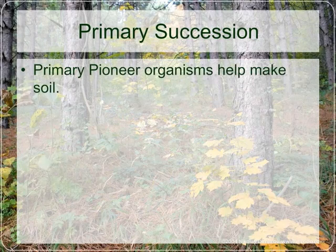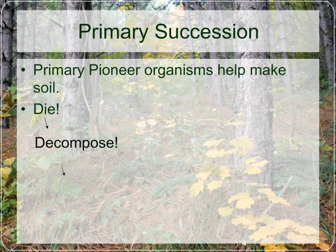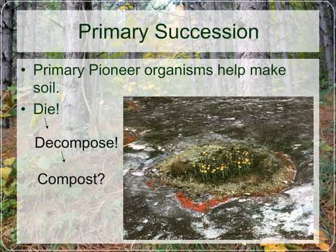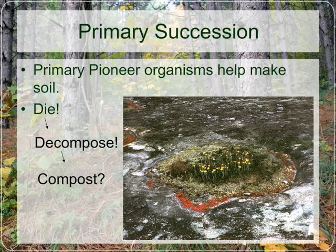As those algae do their job breaking down rocks through weathering, they also die and decompose, leading to basically their own version of compost. This diagram shows what was probably a large rock with a depression in the bedrock. As those pioneer lichens died, the depression was deep enough to hold on to little bits of organic material, and over time we get the establishment of flowering plants — a little island of primary succession going on right there.